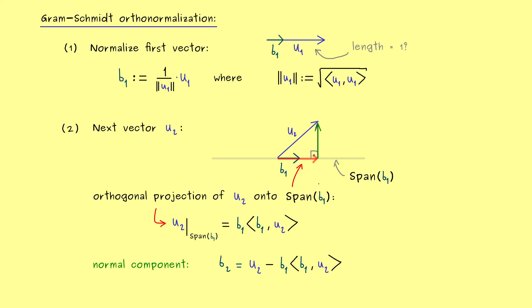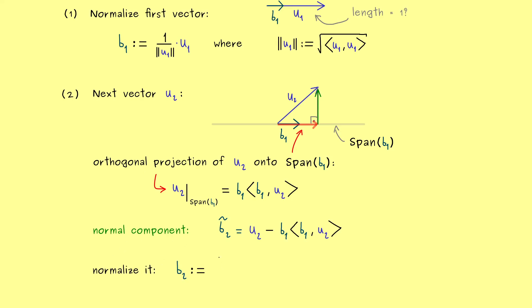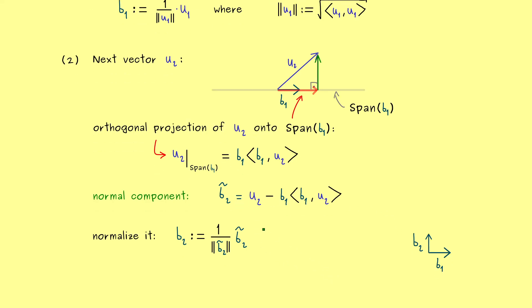Indeed, it's orthogonal to b₁ by definition. However, let's first call it b₂ tilde, because it's not normalized yet. Indeed, there is no reason here that the normal component has length 1. Therefore we just have to normalize it in the same way as before, which means we just scale by 1 divided by the norm. So there we have it, this is now our vector b₂. And by construction it's orthogonal to b₁. In other words, now we already have an ONB of this two-dimensional subspace. And with that knowledge we can just continue with the third vector.